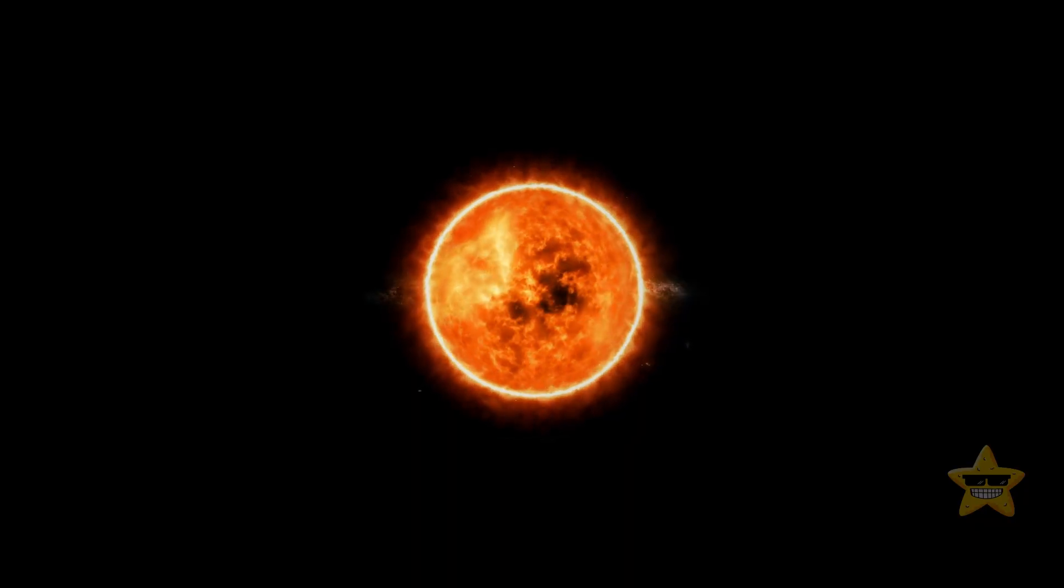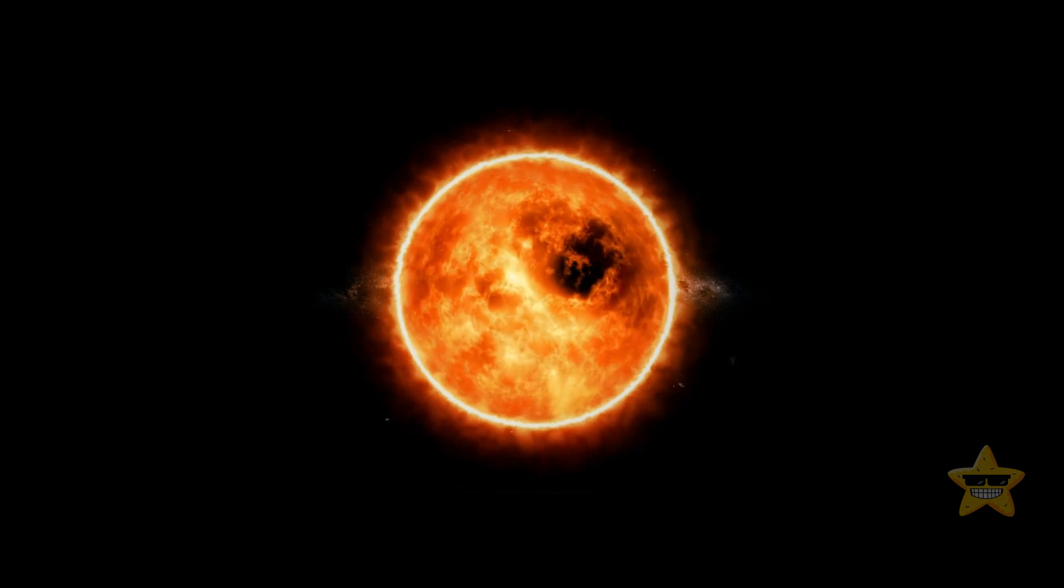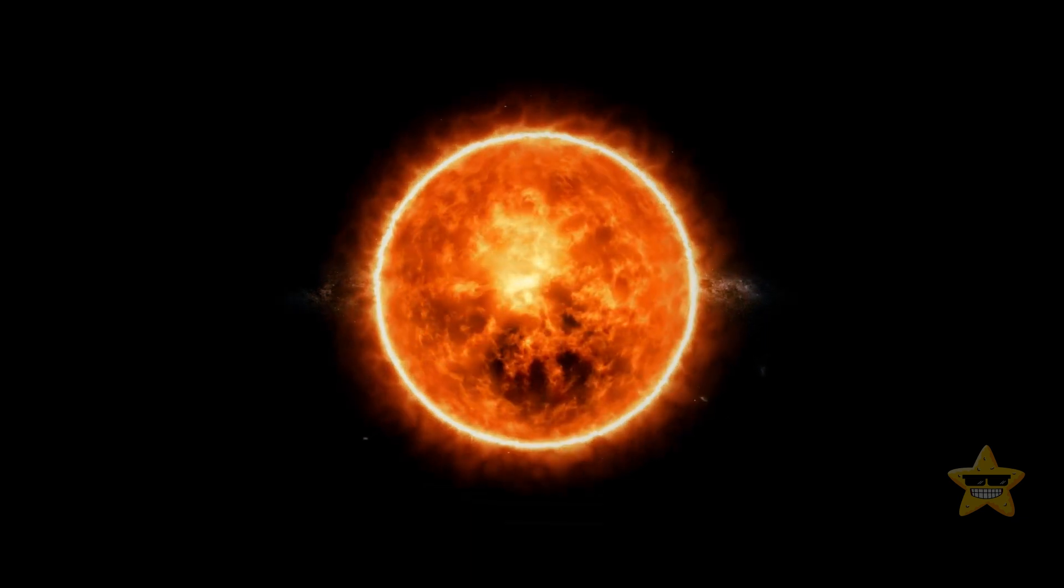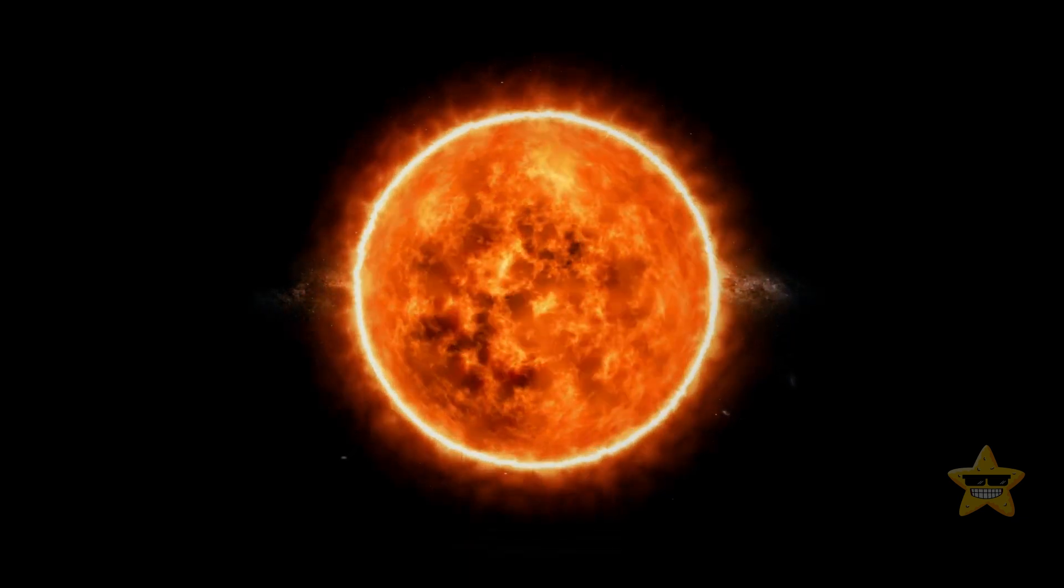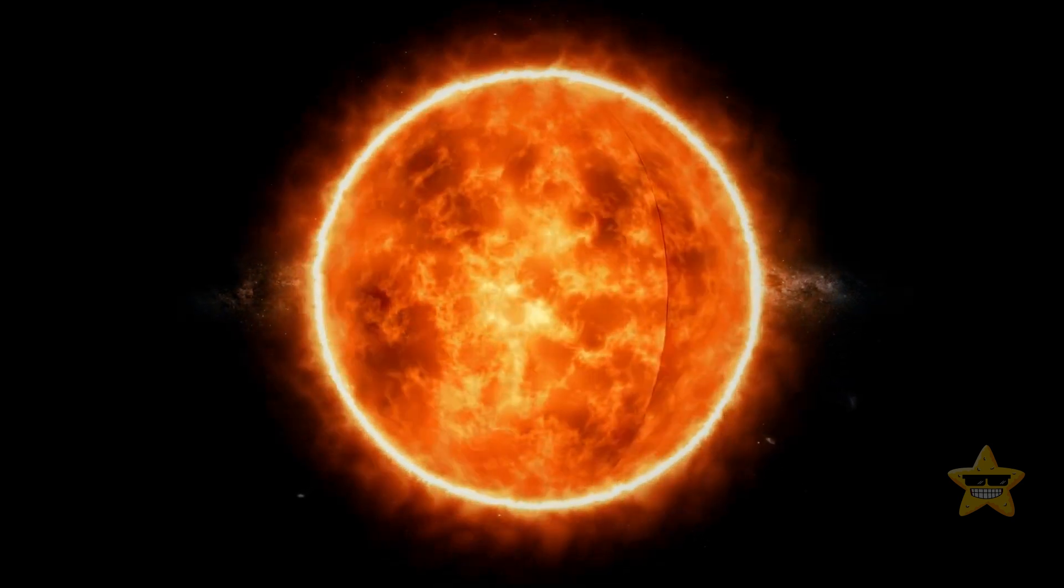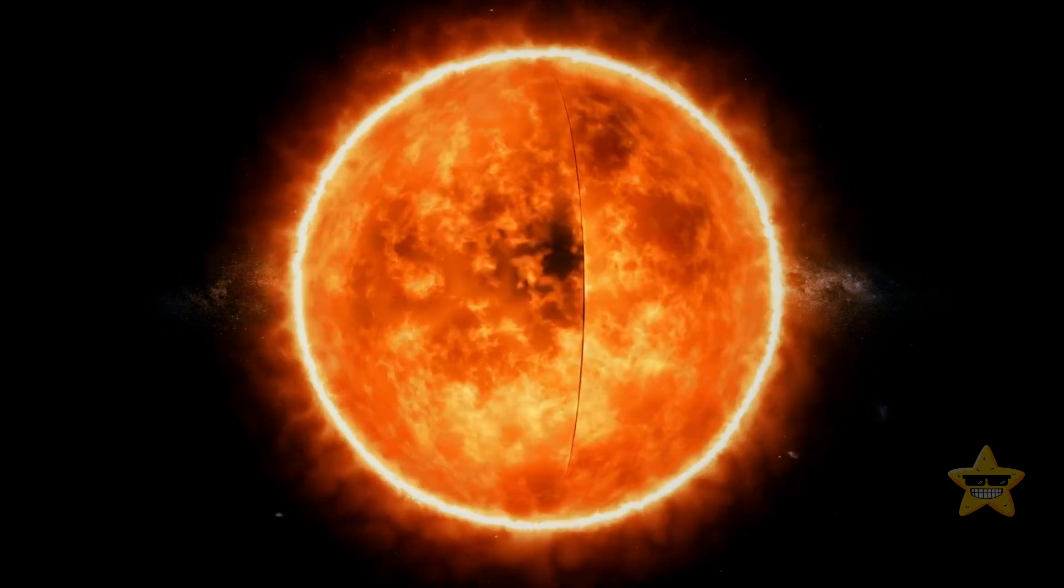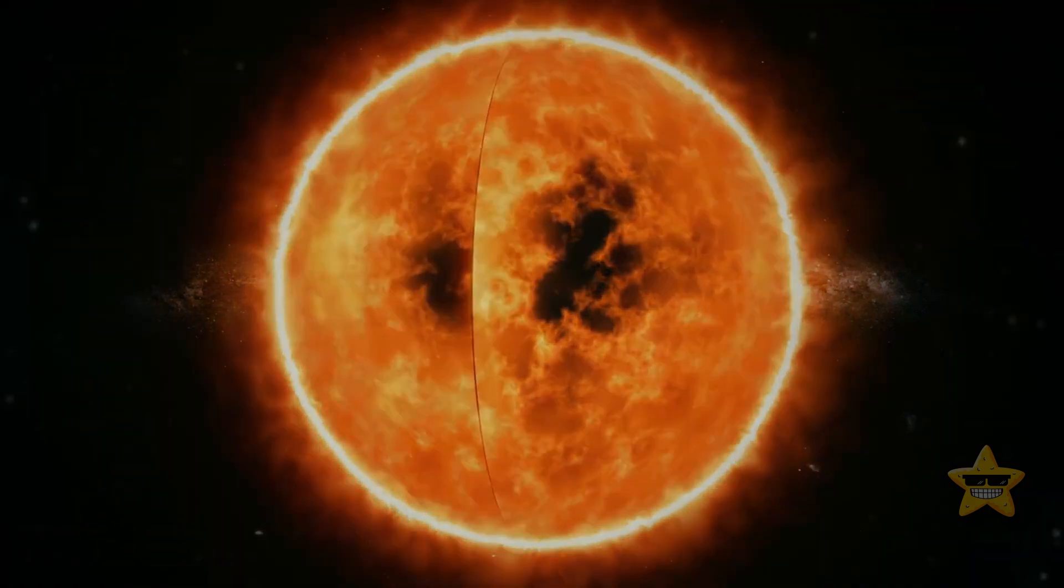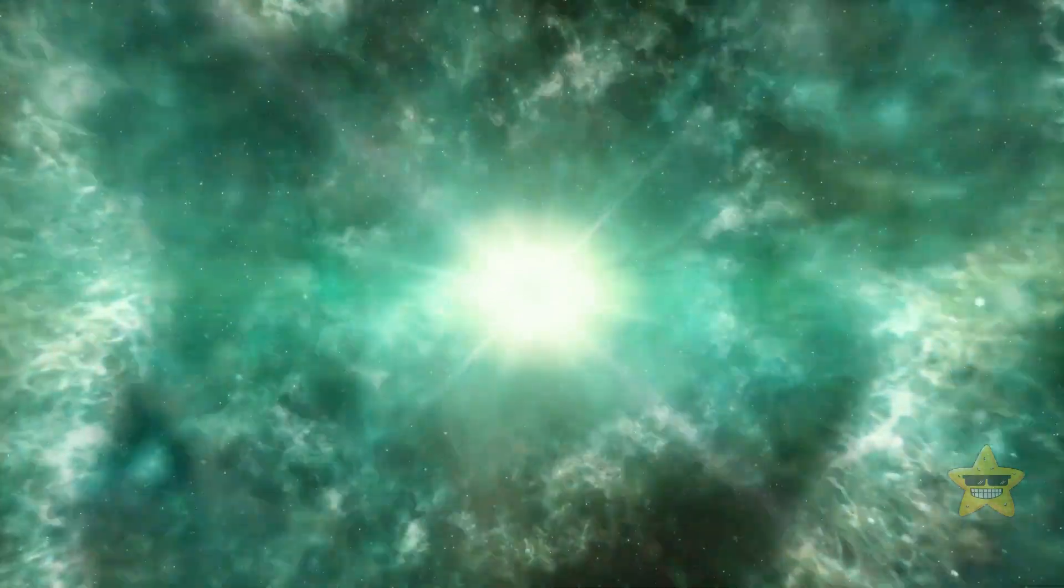There are also type 2 supernova. They happen when a star runs out of fuel, and then some of its mass starts flowing into its core. The core grows and grows and becomes so heavy that it cannot withstand its own gravitational force anymore. That's when the core collapses, resulting in a supernova.